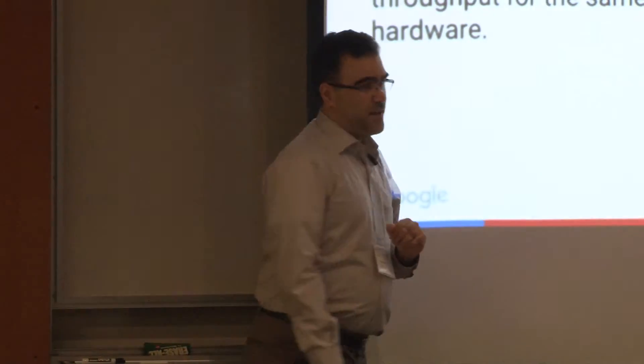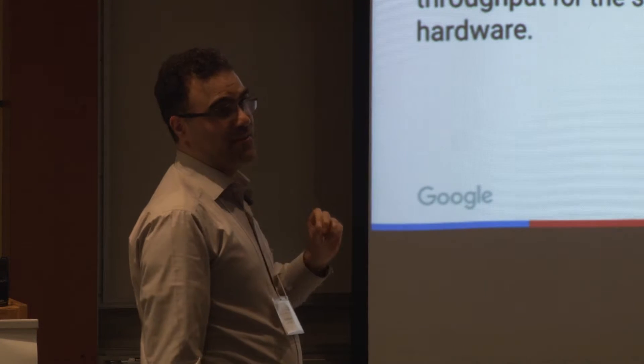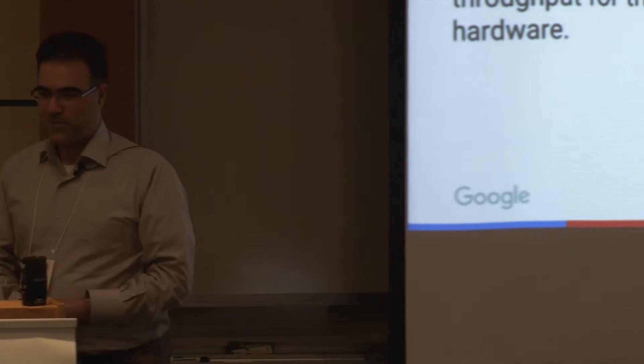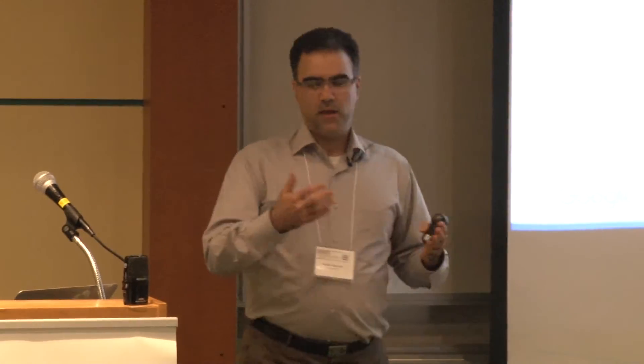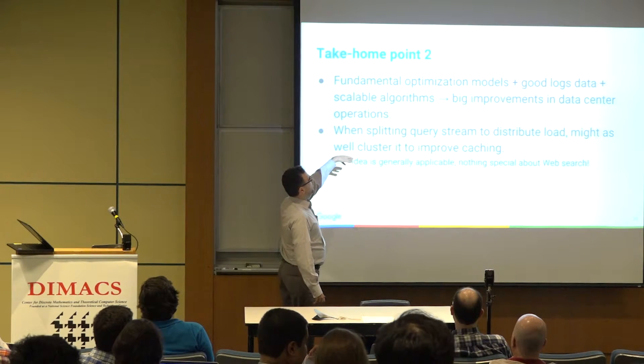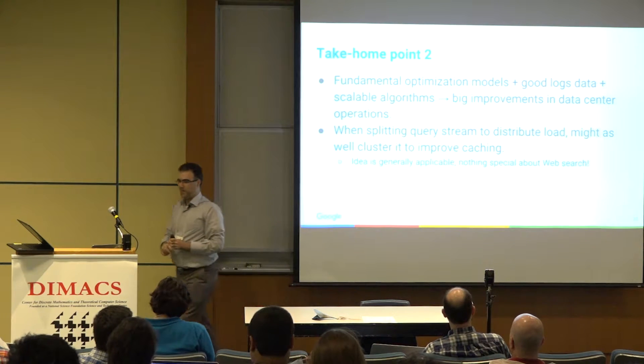This is another story of applied algorithms there. The main result of this part is we did save 25% of cache misses for backend of search for whole search. This was a big deal three months ago. So now we have a mandate to grow our infrastructure optimization team. This was one of the biggest improvements in flash bandwidths, for example, for backend of search they had the past year. The take-home message for the second part is you can use log information and basically balanced partitioning to improve cache misses.